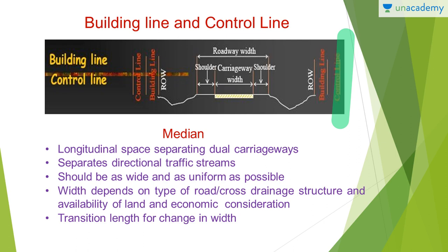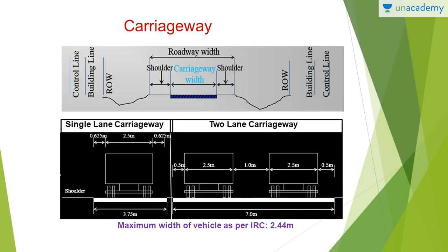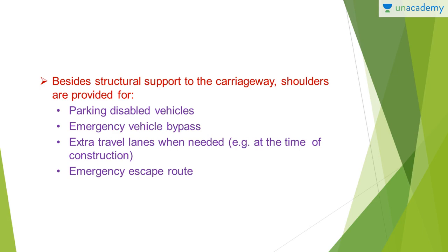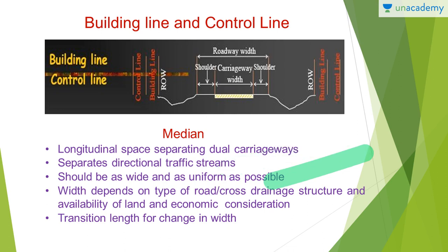Now let us have a look at the median. Medians are longitudinal spaces separating dual carriageways, and they also separate directional traffic streams — one going in the forward direction and the other coming in the backward direction. A median should be provided as wide and as uniform as possible. Its width depends upon the type of road, cross drainage structure, availability of land, and economic considerations. A transition length for change in width is also provided.